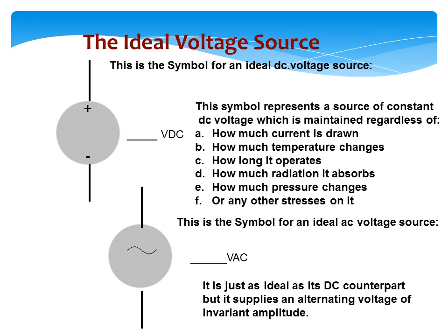This is the symbol for an ideal AC voltage source. It has that squiggle in it. It is just as ideal as its DC counterpart, but it supplies an alternating voltage of invariant amplitude.